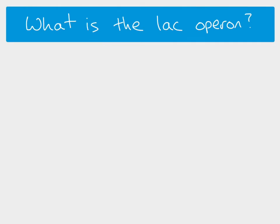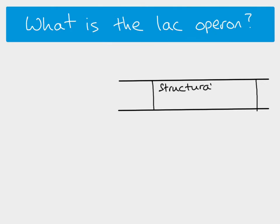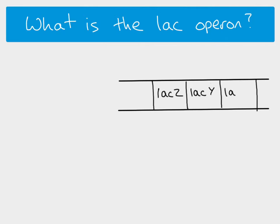Let's look at this in more detail. This length of DNA contains our structural genes. The structural genes in the lac operon are: lac Z, lac Y, and there's also another gene called lac A, which codes for an enzyme called transacetylase. We don't need to know the specifics of what that enzyme does. We underline them all as convention to show that they are genes.